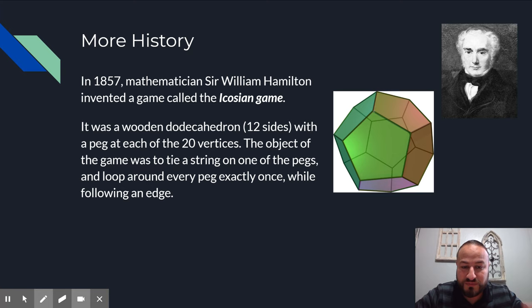There was a peg at each one of these vertices. And the goal of this game was to actually tie a piece of string around one of the pegs and you would start there and you would travel to each through each edge, loop around the next peg, loop around the next peg and so on. And your goal was to try to loop around every peg exactly once but also end back where you started.